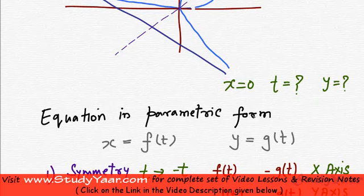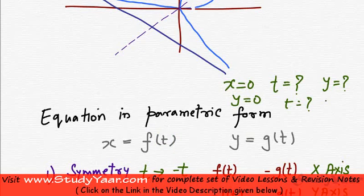Similarly you can put y equal to 0 over here, get the corresponding t, put that t over here and get the corresponding x. So, this is how you are going to find out the intersection with coordinate axes.